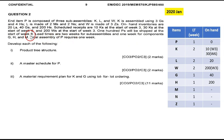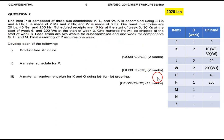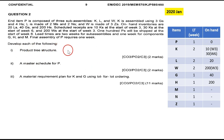So we know that on week 6 we have 100 P. The lead times are: two weeks for sub-assemblies K, L, W — so K, L, W is two weeks each; one week for G, H, and M — so G, H, and M are one week each; and final assembly requires one week for P with zero on-hand. We need to answer: draw the product structure/bill of material, then do the master schedule for P, then MRP for K and G using lot-for-lot ordering.